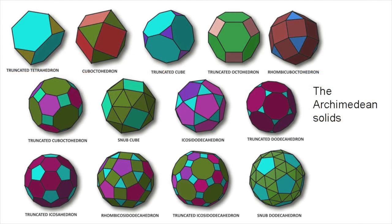A convex polyhedron is said to be semi-regular if its faces have a similar arrangement of non-intersecting regular plane convex polygons of two or more different types about each vertex. These solids, of which there are 13 different kinds, are commonly called the Archimedean solids.